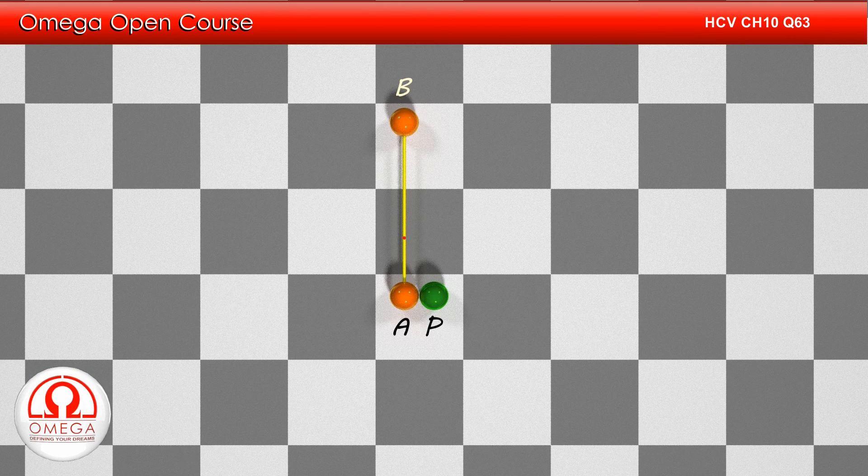Both the balls are initially moving with speed V0 and there is a perfectly inelastic collision between A and P. Since both A and P have equal masses, the speed of AP system after the collision is V0 by 2. Also, as there is no force on B, its speed remains unchanged during the collision.